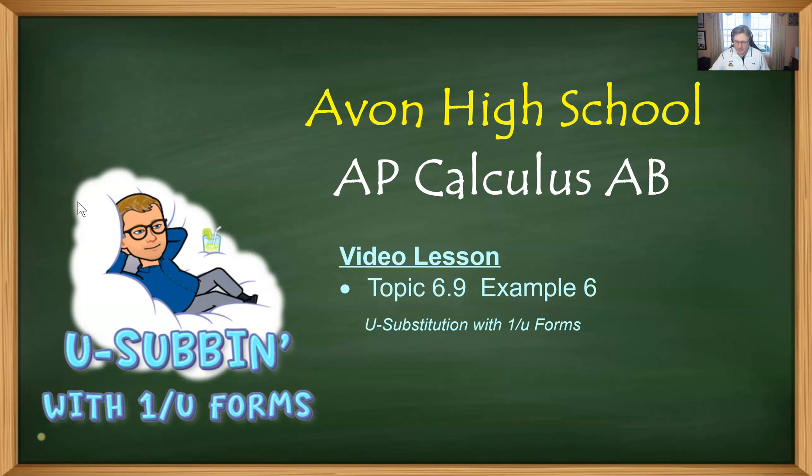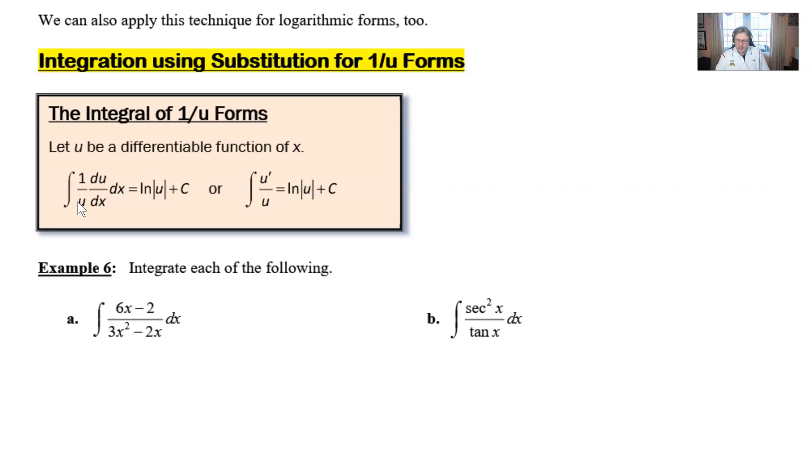Example 6 from topic 6.9 asks that we use this formula that we've experimented with a little bit before, back when we didn't have such a robust denominator. In other words, I'll write it over here. We had seen that the integration of 1 over x with respect to x was the natural log of the absolute value of x, just a few videos back.